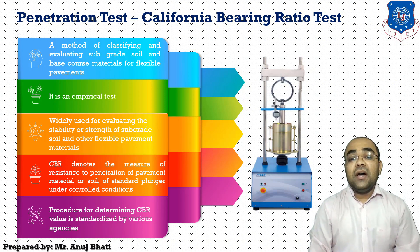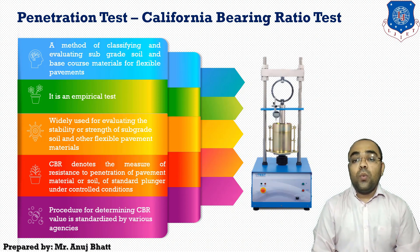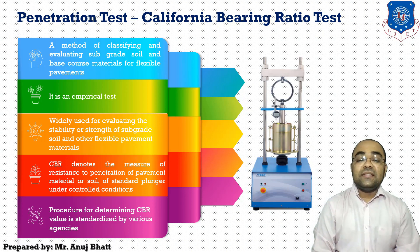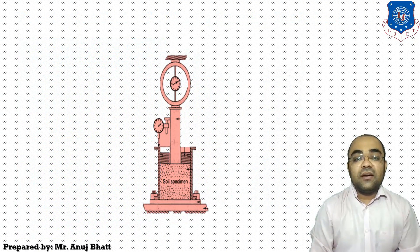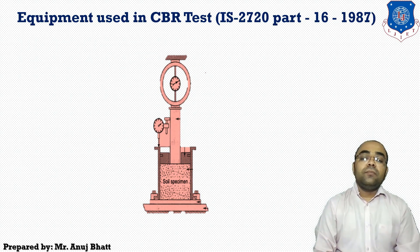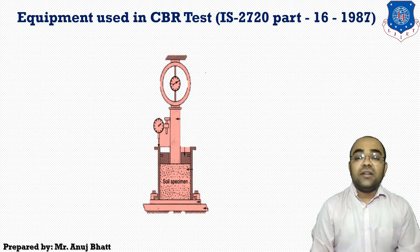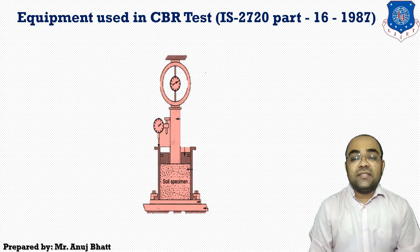Let's talk about the California Bearing Ratio test — which apparatus we are using, what are the equipment, instruments, and accessories used in the CBR test. This is the CBR apparatus, and we will be discussing the equipment used in the CBR test as per Indian Standard code IS 2720 Part 16.